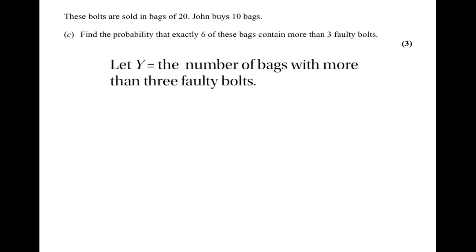The third part introduces a new situation: bolts are sold in bags of 20, and John buys 10 bags. The question asks for the probability that exactly 6 of these bags contain more than 3 faulty bolts. We introduce a new random variable y, equal to the number of bags with more than 3 faulty bolts. Y has the binomial distribution with 10 trials and 0.8929 as the probability of success — 10 because John buys 10 bags, and 0.8929 from the previous answer.